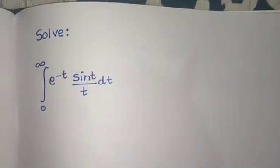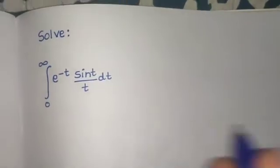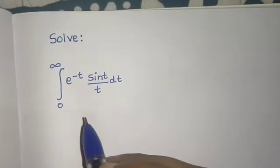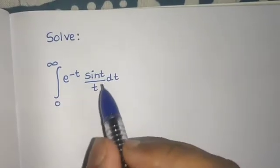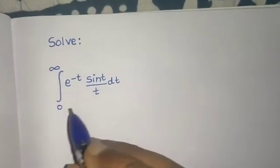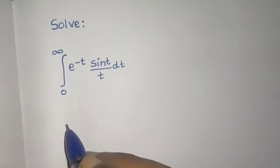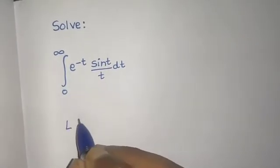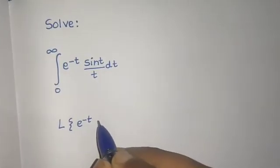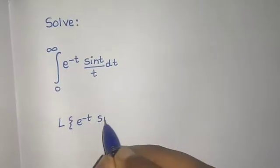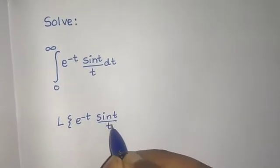Let's see how to solve this integral using Laplace transform. What we do is first calculate the Laplace of this portion, or you can solve for the entire portion. You write here: Laplace of e^(-t) sin(t) divided by t.